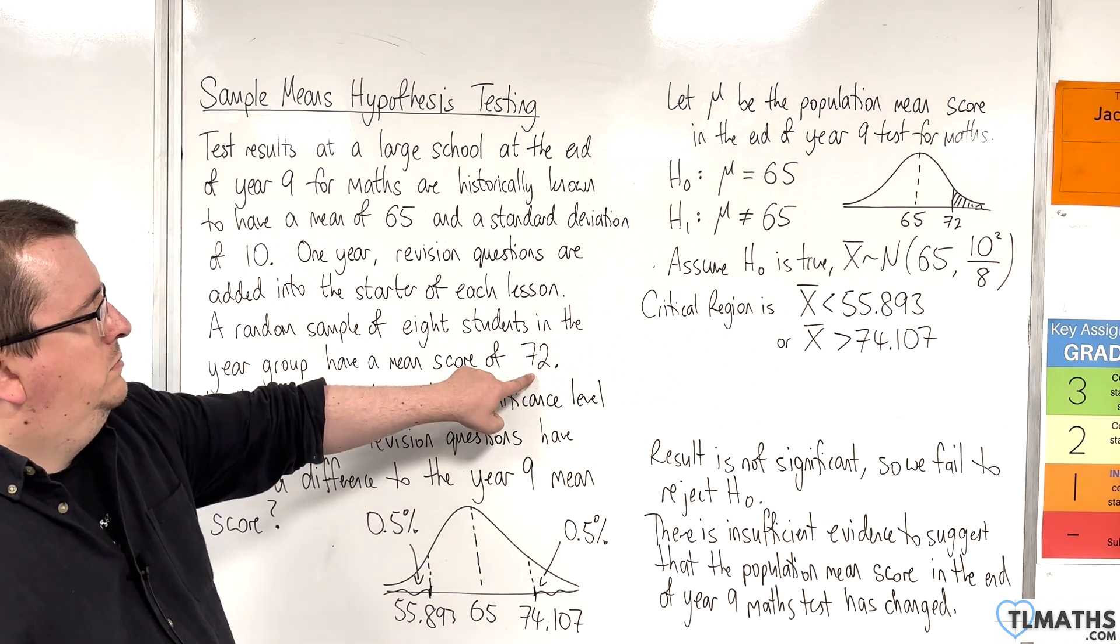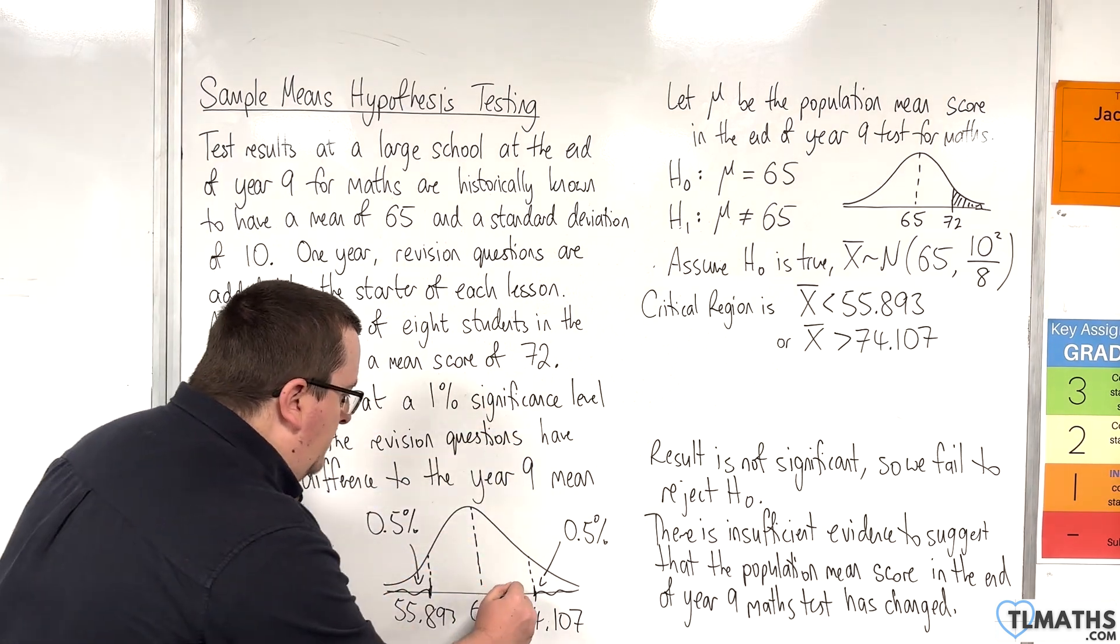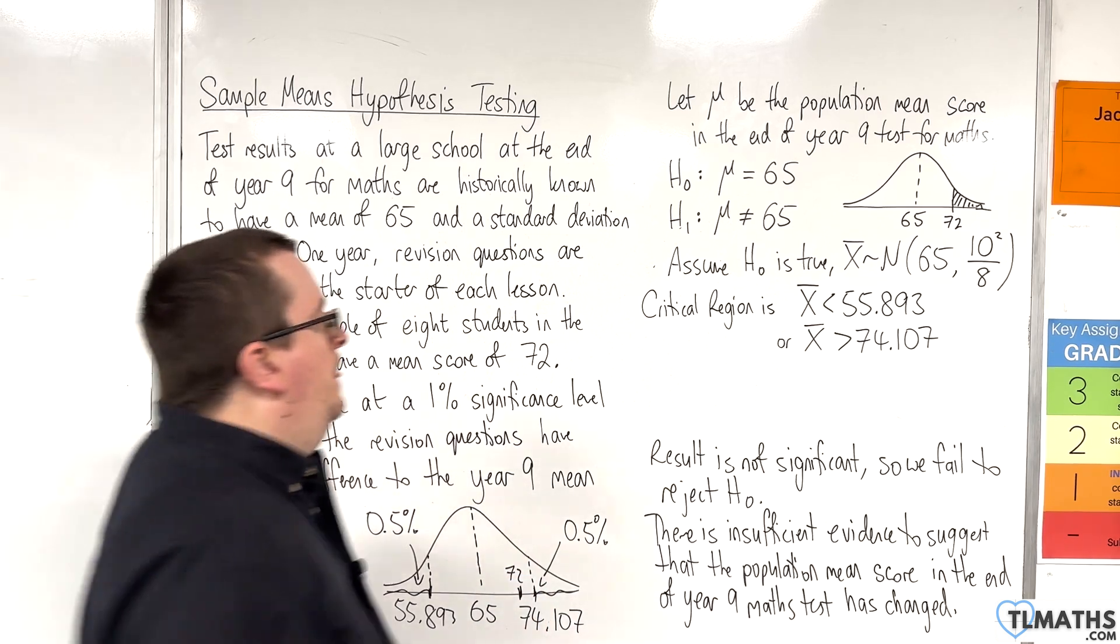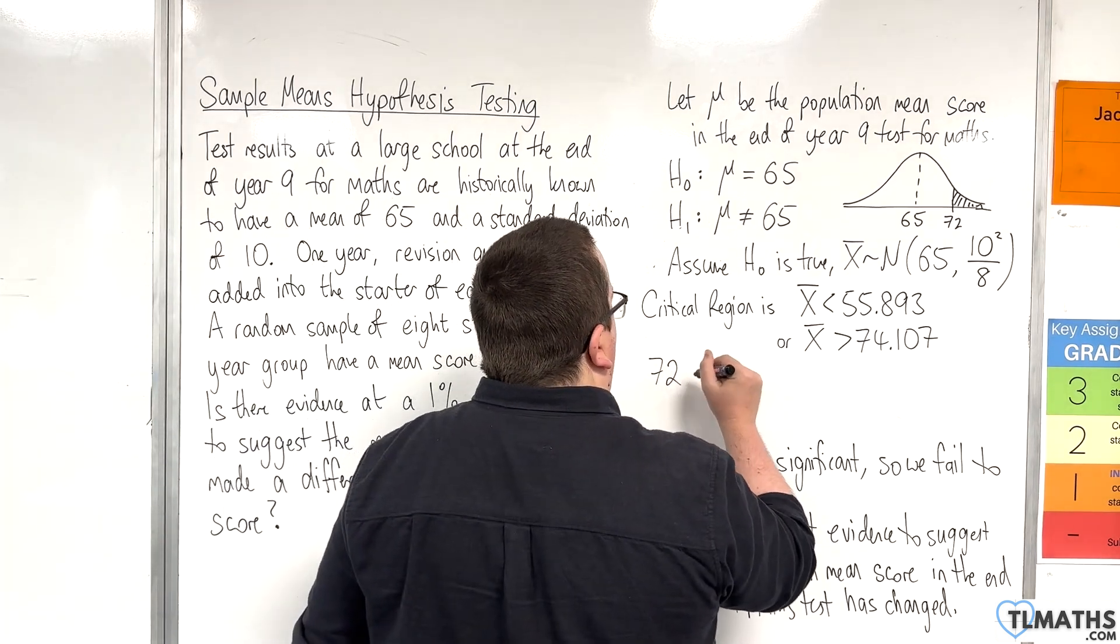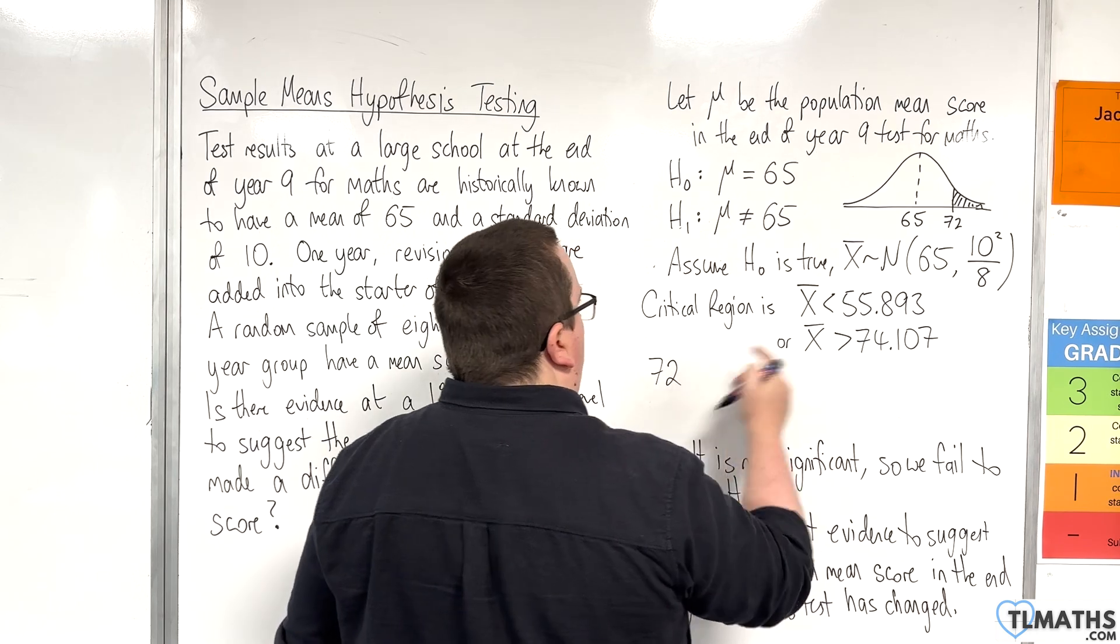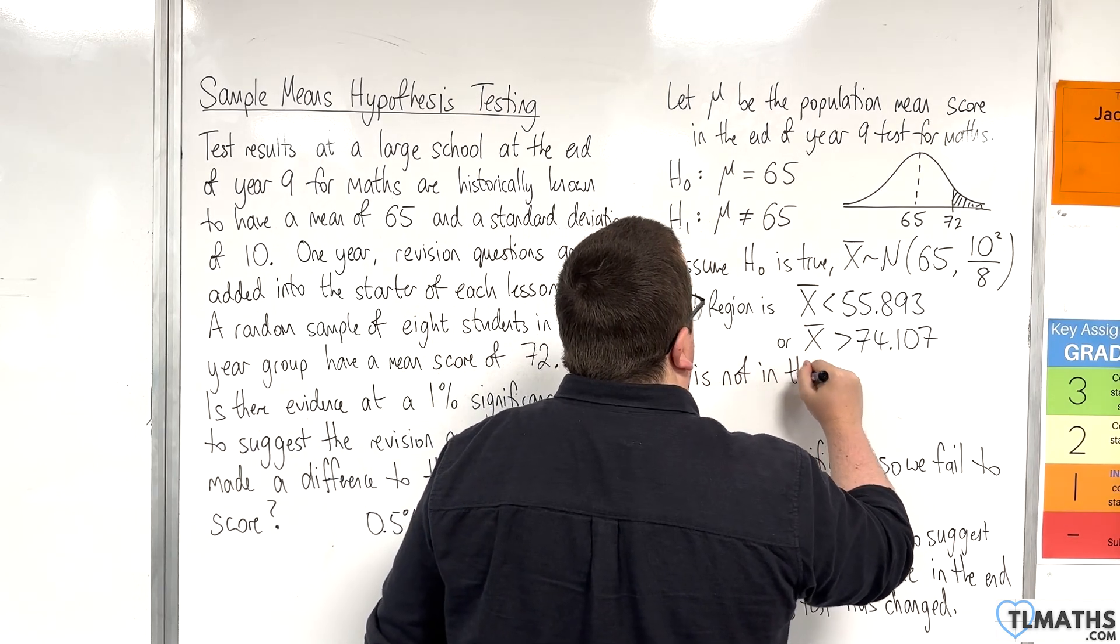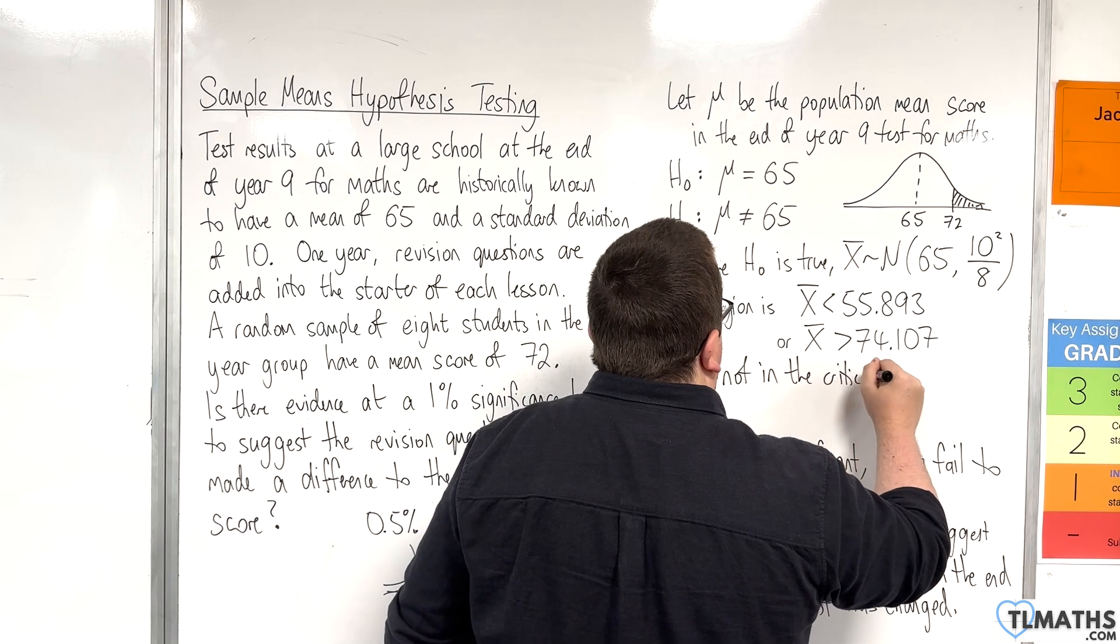So, 72. 72 is about there. It's not in the critical region. So, 72 is between those two values. So, it's not in the critical region.